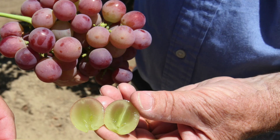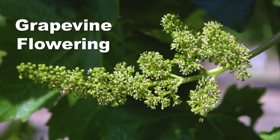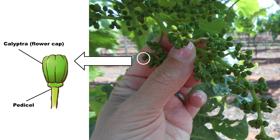Have you ever wondered how seedless grapes are produced? Before we answer this question we must review a few basics of grape berry anatomy and development. In the early stages of flowering the calyptra, or flower cap, loosens and falls off to expose the floral organs.